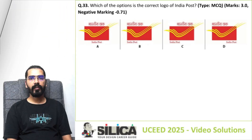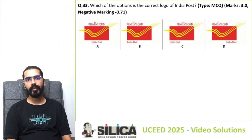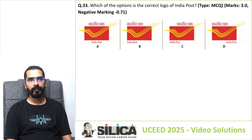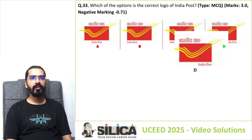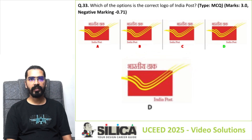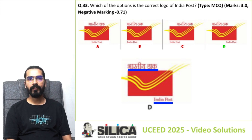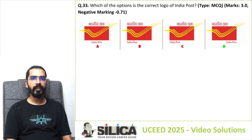Let's solve question number 33 of UC 2025. This is an MCQ type question, meaning only one option is correct. The question: which of the options is the correct logo of India Post? Options A, B, and C are not correct, and option D is the correct answer. Even if you don't remember, you can figure it out because 'India Post' written here and 'Bhartiya Dak' written on top balance each other out, making logo D the most sensible choice.